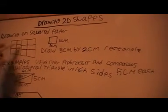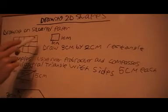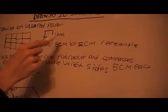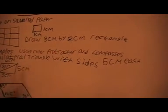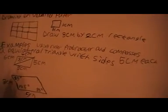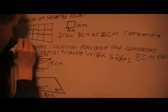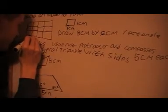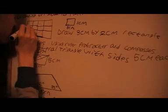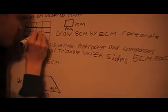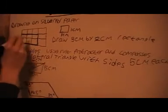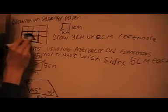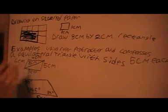If we've got squared paper full of squares like this, obviously they're all the same. We're just going to assume that all these are one by one. We're going to draw a rectangle of 3cm by 2cm. So for 3cm, I'll go along 3, go for these and up 2. So there's my rectangle, this thing here.